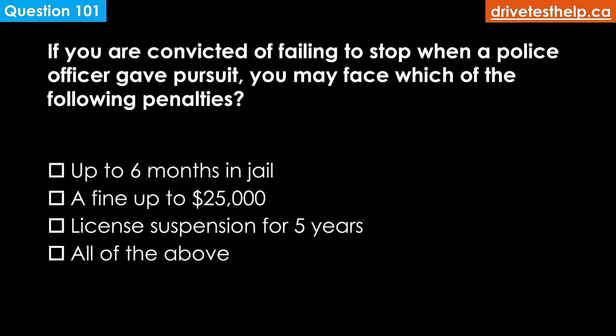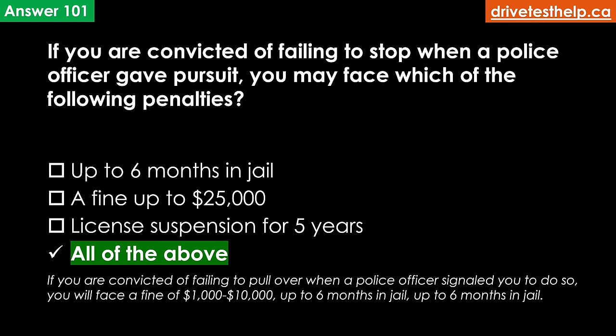If you are convicted of failing to stop when a police officer gave pursuit, you may face which penalties? Options: up to six months in jail; a fine of up to $25,000; license suspension for five years; all of the above. The correct answer is all of the above. If convicted of failing to pull over when a police officer signaled you, you face a fine of $1,000 to $10,000 and up to six months in jail or both. However, if you fled and the police had to pursue you, you face a fine of $5,000 to $25,000, between 14 days and six months in jail, and a license suspension for five years.